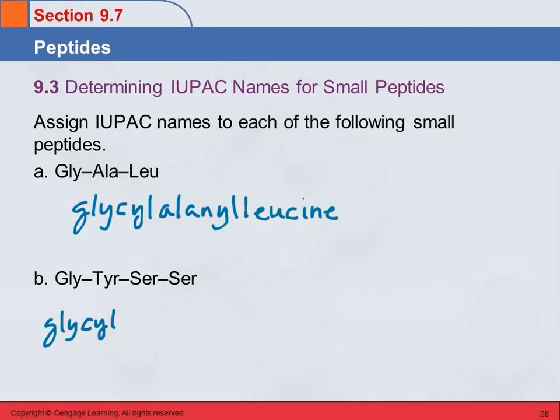So B then is a tetrapeptide. GLY, glycine, TYR, not to be confused with TRP, is tyrosine. So tyrosyl, glycyl-tyrosyl, and serine becomes serine. Glycyl-tyrosyl-seryl-serine, like a tongue twister.